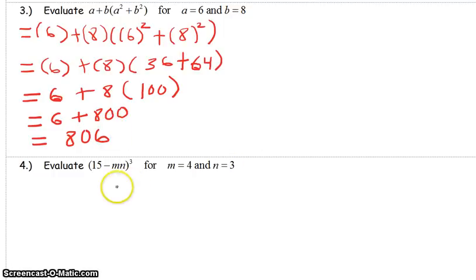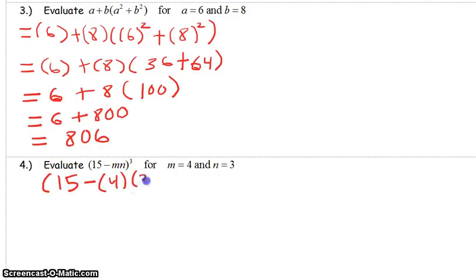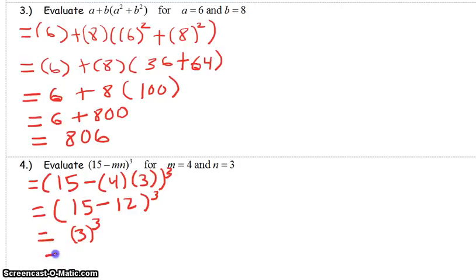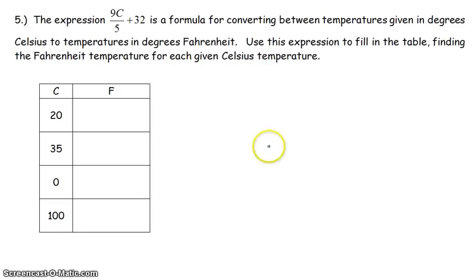Problem 4: we substitute m equals 4 and n equals 3. The whole parenthesis is taken to the third power. Inside the parenthesis we have subtraction and multiplication, so we do multiplication first: 4 times 3 is 12. Then 15 minus 12 gives 3, and we are left with 3 to the third power. 3 to the third power is 27.